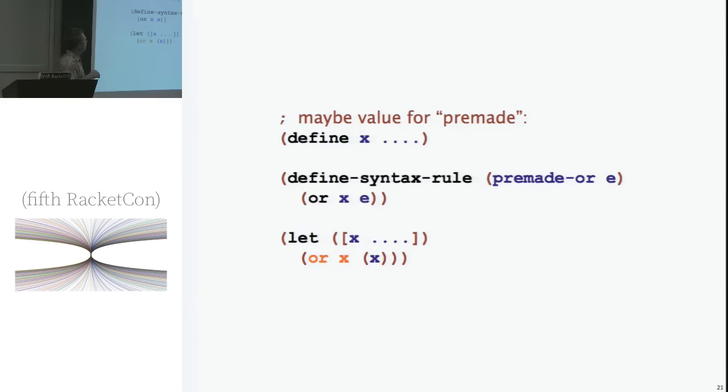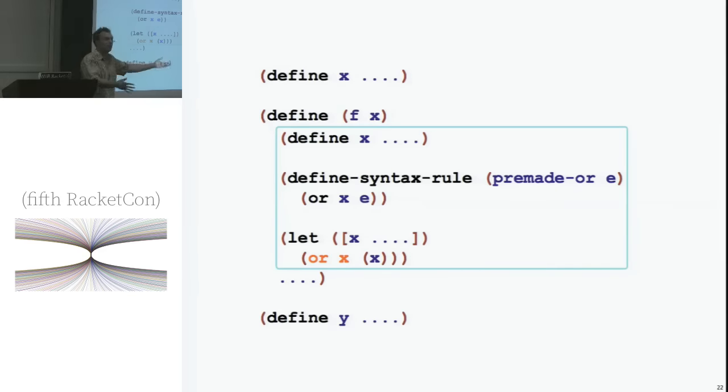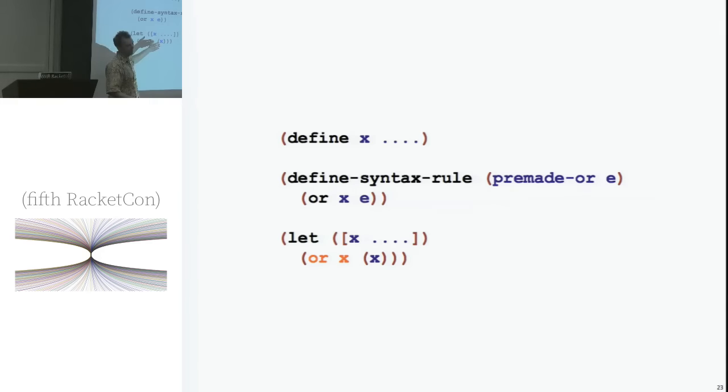And then here's the use of it. I've let X be some function to do a lot of work to compute a value and then I use pre-made or to either get this X or call the X function to get the result. You can see why I've been so uncreative with my variable name. It's to simulate the collisions that are inevitable in the larger picture. I can simulate them by using X all the time here. So what should happen?